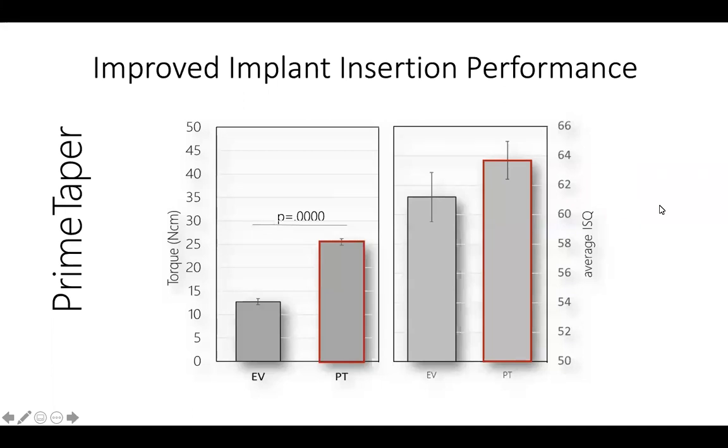When considering primary stability or ISQ measurements, we see a 10% increase in primary stability compared to the previous implant design. It is notable that these values of insertion torque and primary stability are equal to or exceed some of the compressive implant designs that are presently in the marketplace.